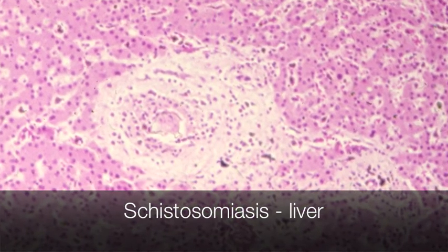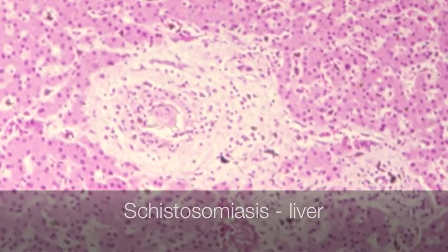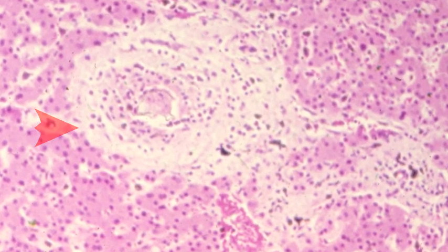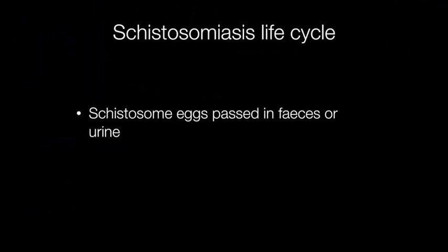This is an example of Schistosomiasis affecting the liver. Finally, the life cycle is completed when the Schistosome eggs pass in the faeces or urine into the stagnant water.